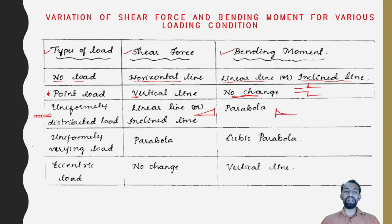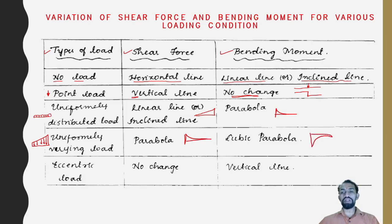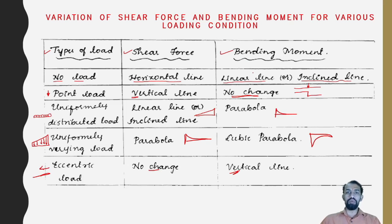For a varying load, which varies and acts in the downward direction, the shear force diagram itself will be parabolic, while the bending moment will be in a cubic fashion. For eccentric loading, where a load acts at a specific point on the beam, there is no change and only a vertical line of bending moment appears. These are the variations of shear force and bending moment for various loading conditions.